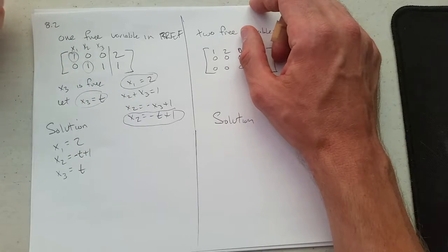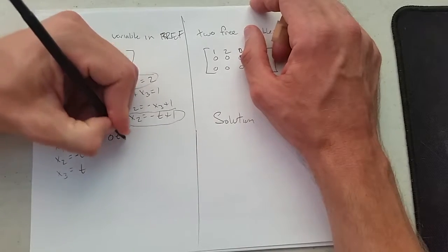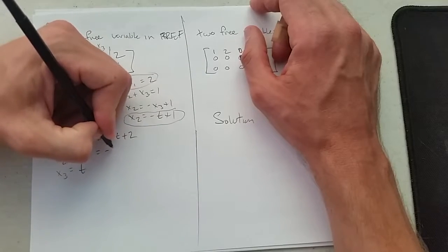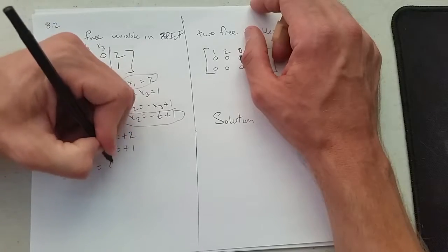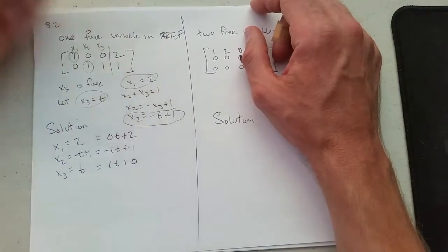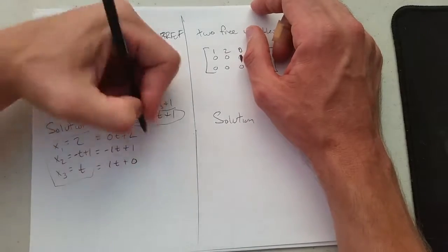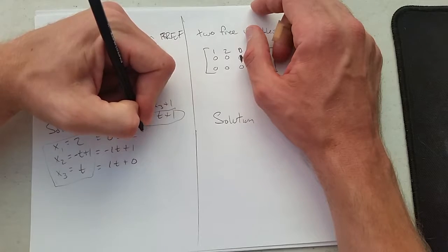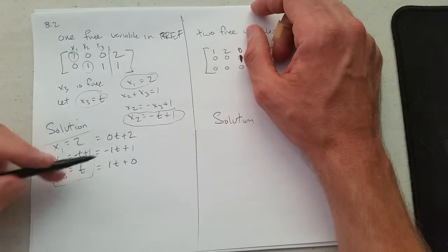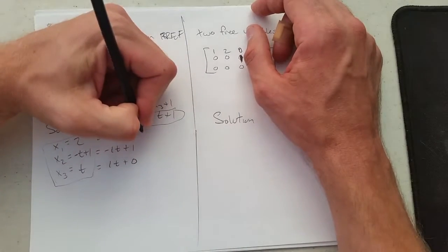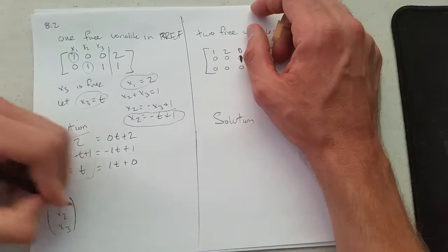There's a few ways to write these down. I could write this as 0t plus 2. I could write this as negative 1t plus 1. And this last one would be 1t plus 0. So this is completely okay to write down. There may be a one or two WebWork problem. This would be a completely okay solution on your final exam. But some WebWork questions want it in a slightly different form.